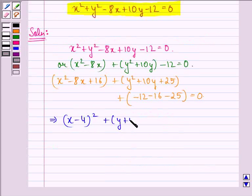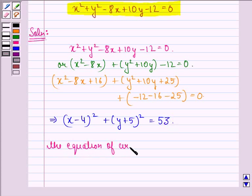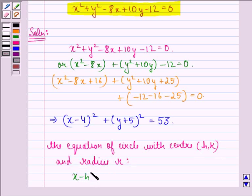Now this implies x minus 4 the whole square plus y plus 5 the whole square is equal to 53. Now we know that the equation of a circle with center h, k and radius r is given by x minus h the whole square plus y minus k the whole square equals r squared.